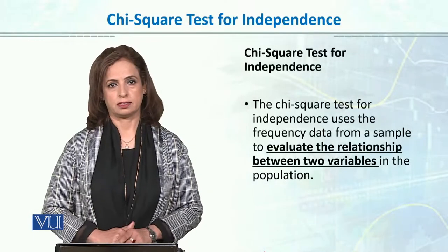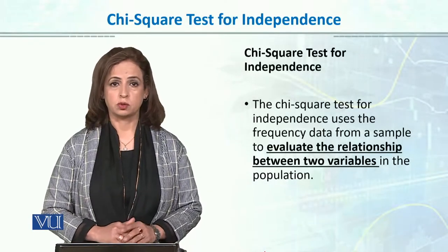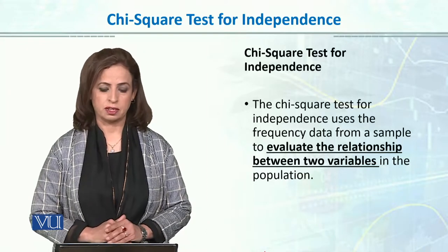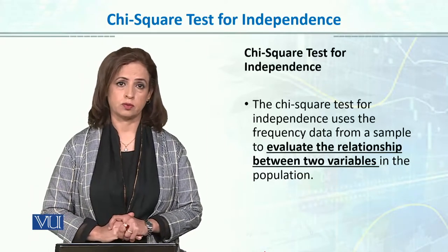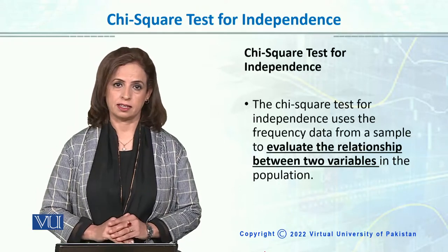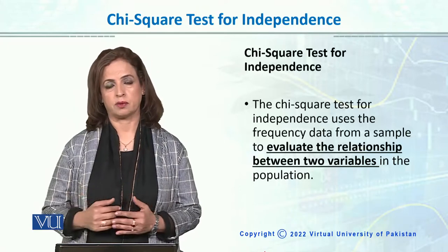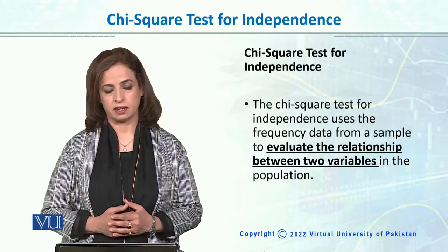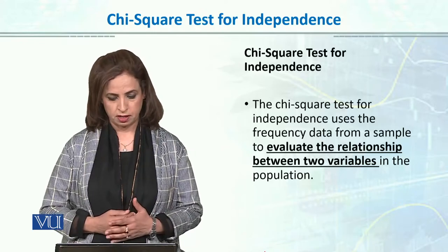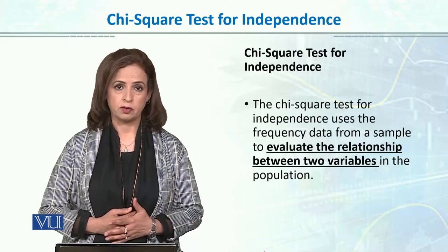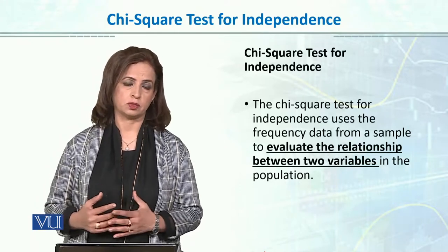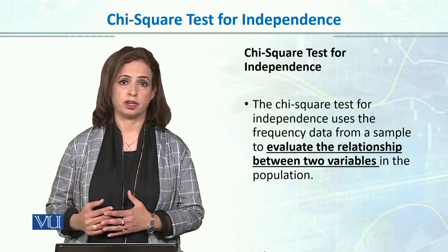The second type of chi-square test is a chi-square test of independence. We also have data in frequencies, but what we check is not goodness of fit, but how well the two variables are related or independent. So we evaluate the relationship between two variables in the chi-square test of independence.